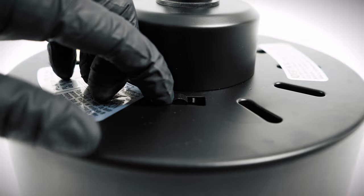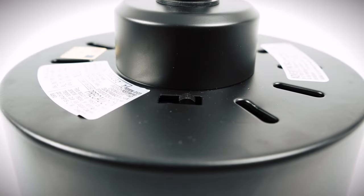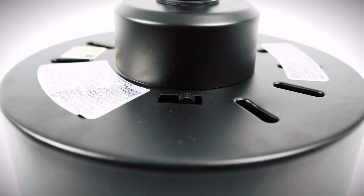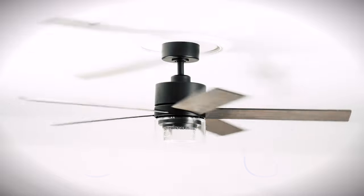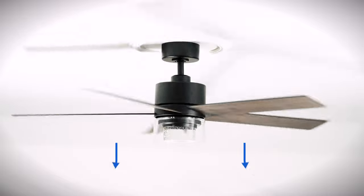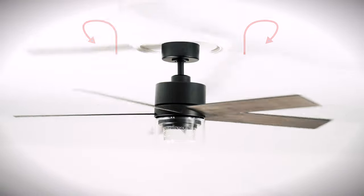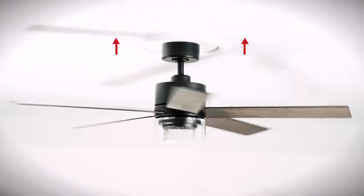With the fan turned off, use the reverse switch to change the direction of the blade rotation. For warm weather, the fan will spin counter clockwise to push air downward and produce a cooling effect. For cool weather, the fan will spin clockwise to cycle warm air off the ceiling.